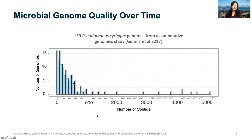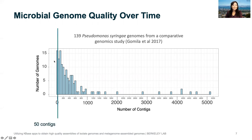To give some context about the types of genomes people are using these days: this was a comparative genomic study of Pseudomonas syringae genomes, and this is a histogram of the number of contigs. You can see that a lot of these genomes actually had thousands of contigs. Personally, I like to use genomes of less than 50 contigs, but that's only the first bin of the histogram. Using fragmented genomes can be problematic because if there's a gene on the end of a contig, you might not predict it because you only have half of the gene.